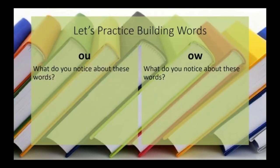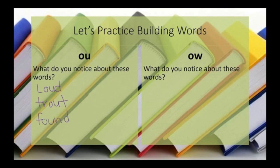We're going to practice building words with OU and OW that make the OW sound. For our OU words, we're going to use the words loud, trout, found, pout, and out. Notice how in each of these words, the OU is inside the word or at the beginning of the word — never at the end.